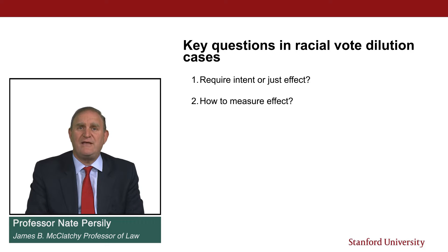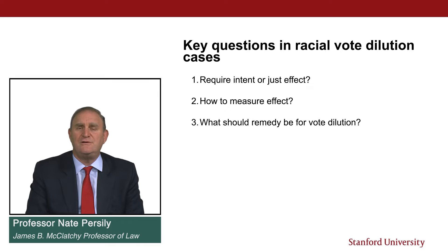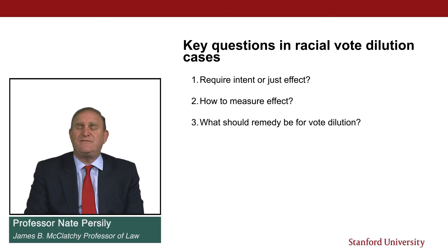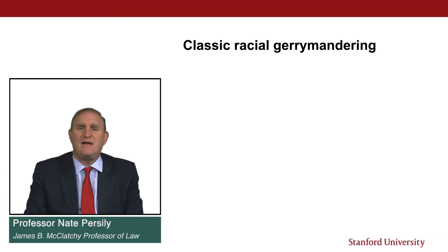As you know from the partisan gerrymandering cases, the issue of partisan bias has always been seen as controversial and difficult to ascertain. So how should we measure the effect of racial discrimination when it comes to the redistricting process? And what should the remedies be if we do find illegal vote dilution on grounds of race, either under the Equal Protection Clause or under the Voting Rights Act? Let's start with the classic case of Gomillion versus Lightfoot in 1960.